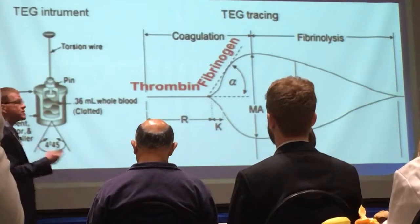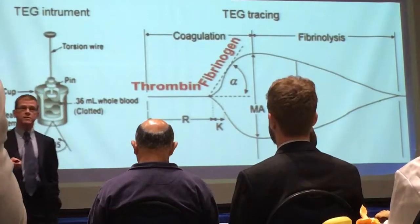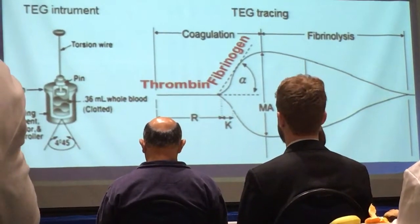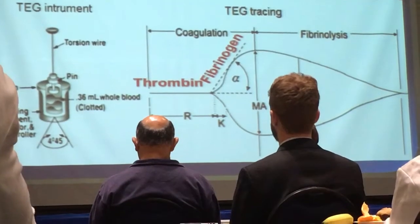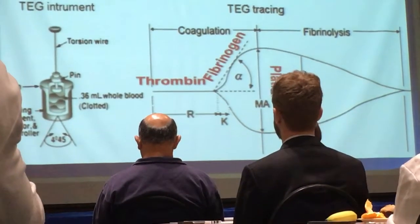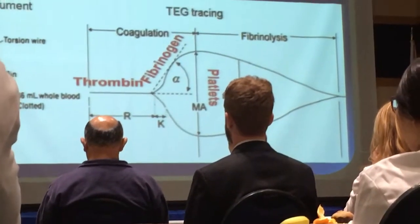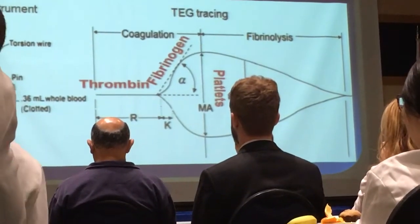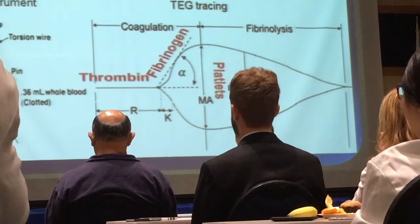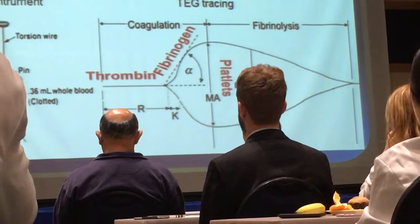If those angles are bad or the time is slow, you need fibrinogen — you need cryoprecipitate. And then finally, the width to which those two lines separate regards the strength of the clot. The strength of the clot is formulated by fibrinogen, now fibrin, sticking platelets together.